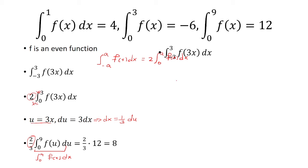Now, we could also have done it a different way by first doing the u substitution and gotten that we have 1 third times the integral of negative 9 to 9 of f of u du.